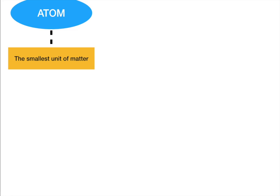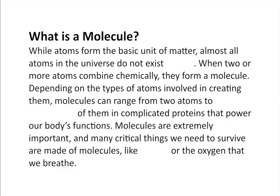Let's go ahead and start a graphic organizer. We have an atom — that's our first concept — it's the smallest unit of matter. Go ahead and write this down. Now let's talk about what happens whenever we actually put atoms together. While the atom is the fundamental building block of the universe, almost all atoms don't exist alone — they're usually stuck together with other atoms. When two or more atoms combine chemically, they form what is called a molecule.